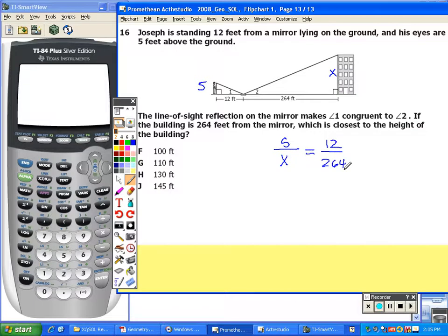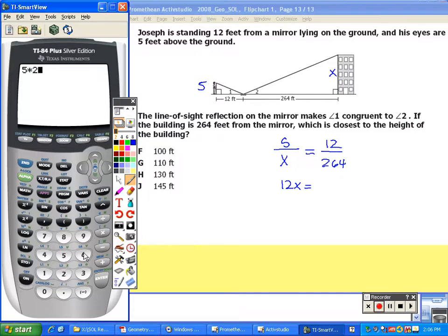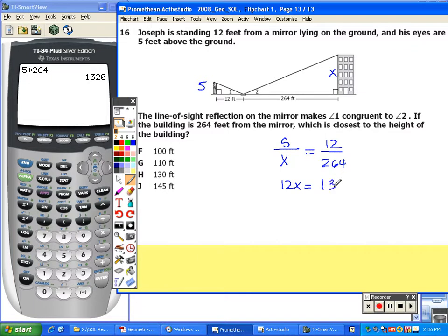When I cross-multiply, I'm going to have 12x on one side, and then 5 times 264 gives me a total of 1,320.